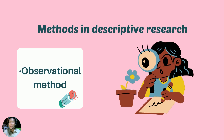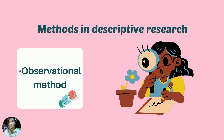There are methods in descriptive research. The first, and very common one, is the observational method. From many different perspectives, this method is the most effective way to conduct descriptive research. Researchers make use of both qualitative and quantitative observations.